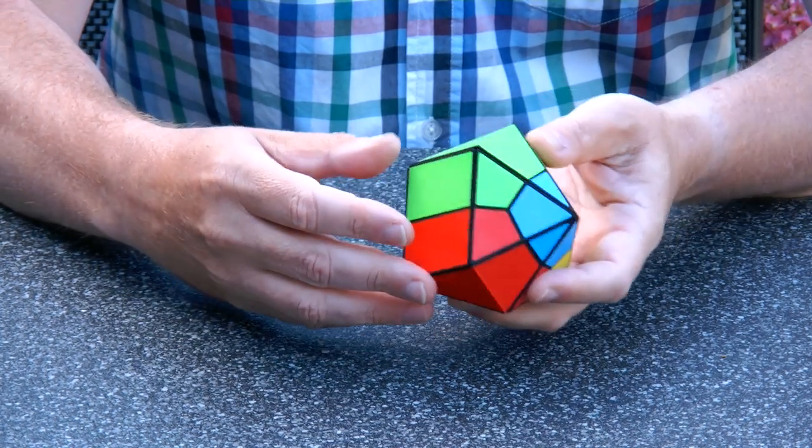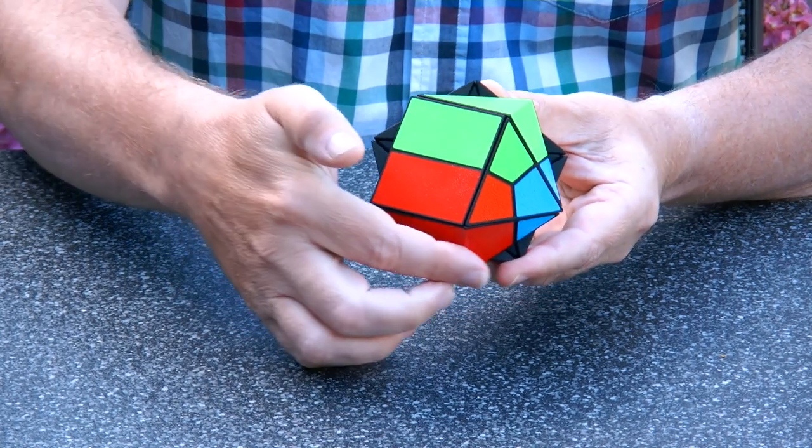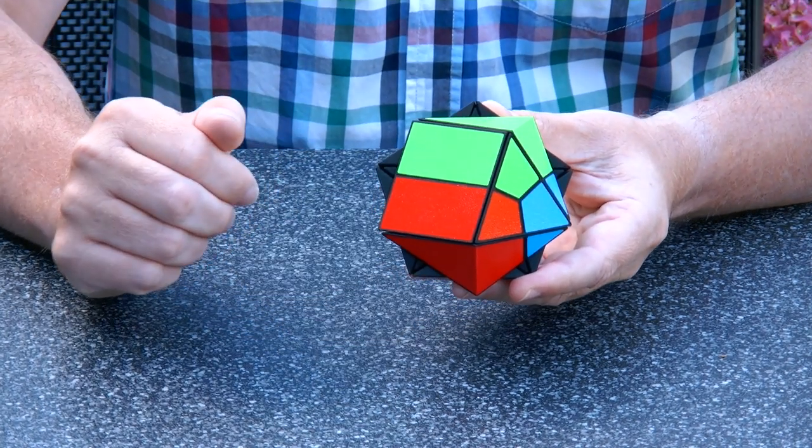But what's interesting is when you start turning, we see a pentagonal cross section, which is surprising.